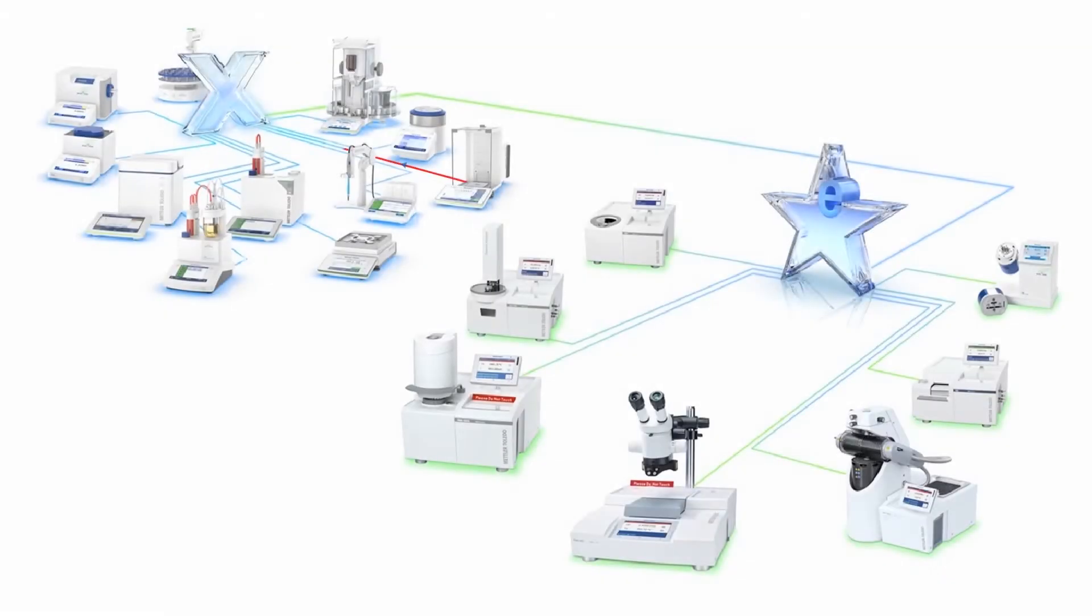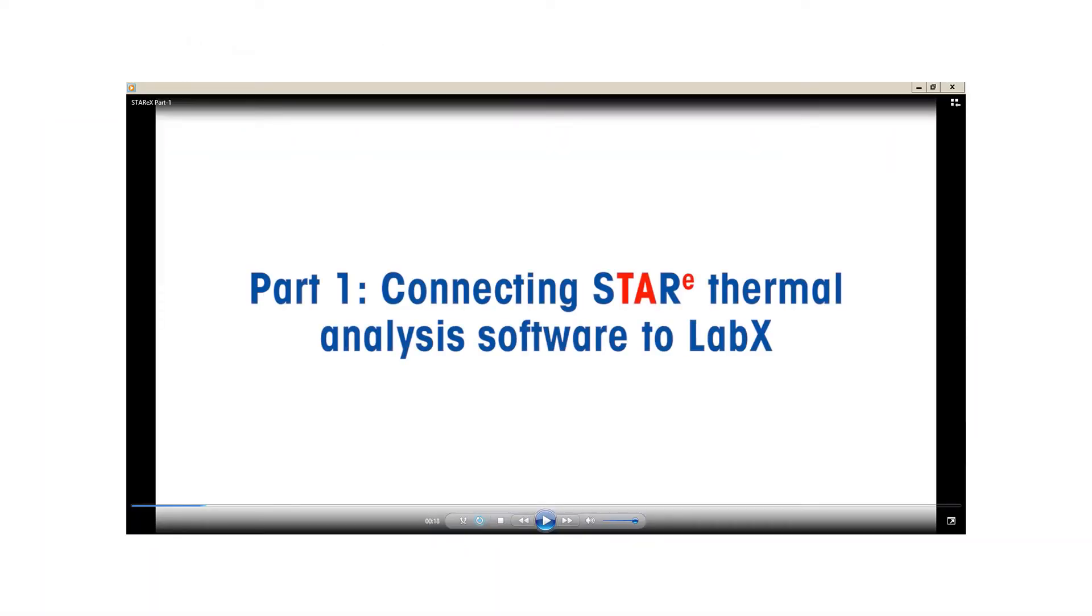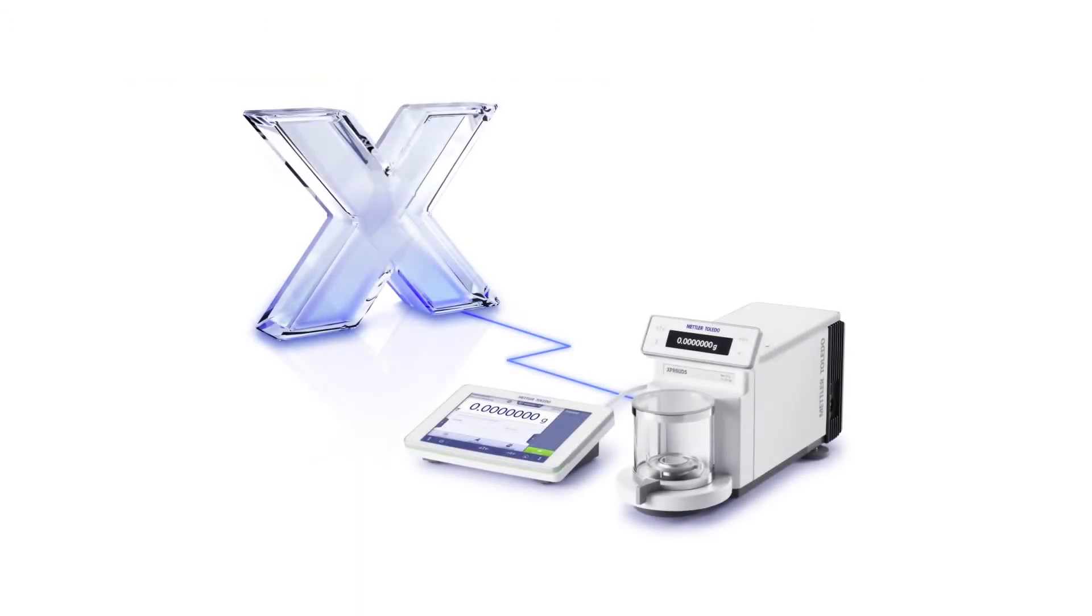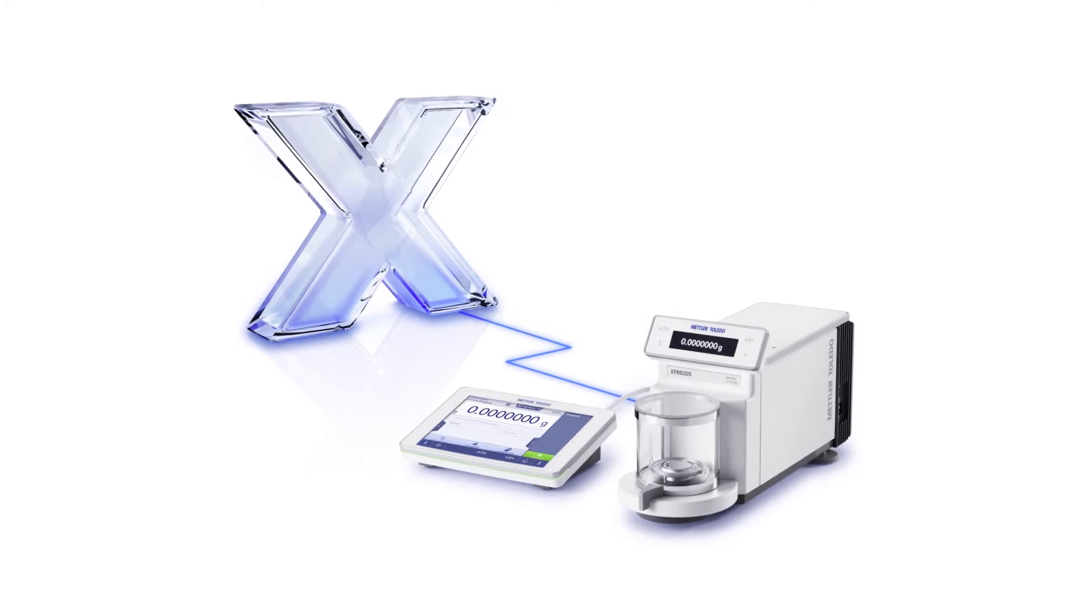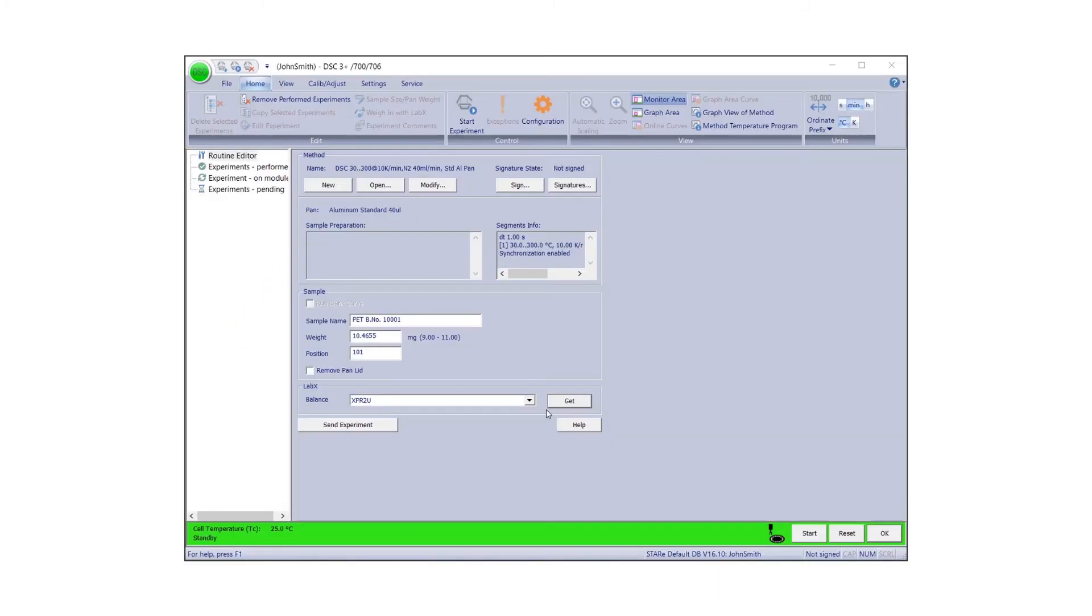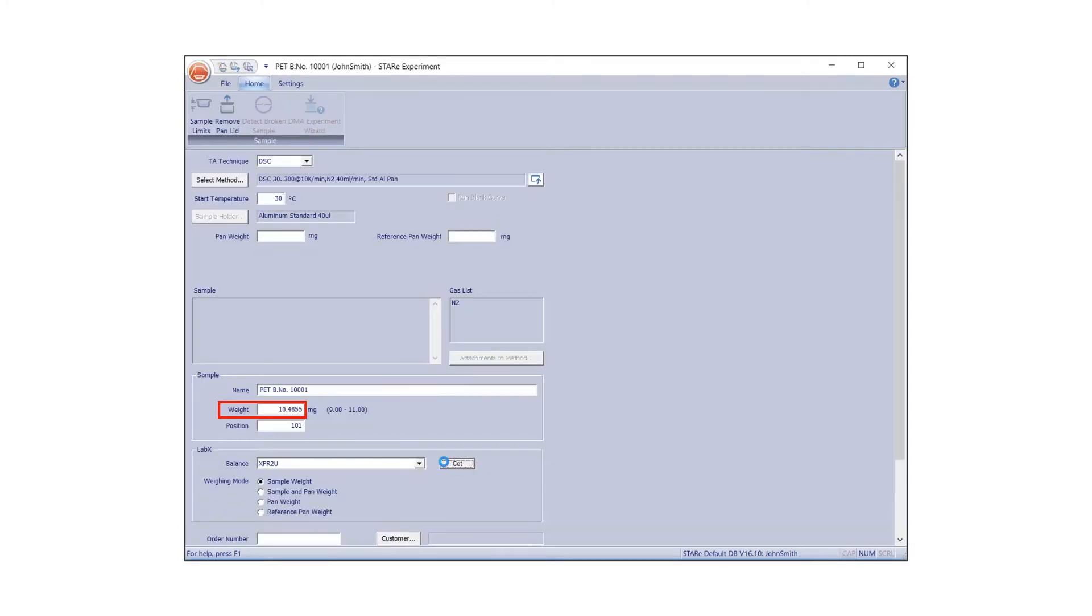In this video we show you how to transfer weight data from a balance to the Star E software. If you have not yet established the connection to LabX, please refer to Part 1 of this series for detailed instructions. Once connected, any external balance from Mettler-Toledo can be used to weigh in samples. Weighing results are automatically transferred from the balance to Star E software's routine or experiment window.